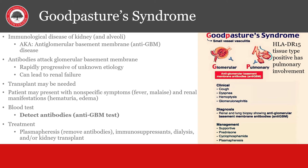Goodpasture syndrome is an immunological attack on the kidneys. It is a form of small vessel vasculitis where the basement membrane of the glomerulus is attacked by antibodies. The patient can have progressive renal failure that can be rapid. The worst form also involves the lungs, and these patients have HLA-DR15 tissue type positive on biopsy. Immune-modulating medications must be used along with plasmapheresis to decrease the number of these antibodies. The hallmark diagnostic finding is the presence of anti-GBM in the serum as well as biopsy showing the same antibody.